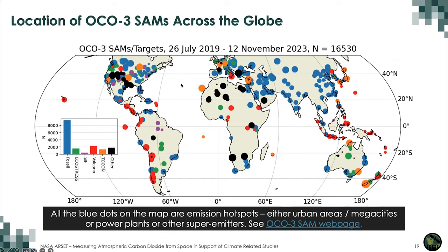Information about where SAMs are taken and how many have been taken over a particular location is available on a public webpage. I strongly recommend checking out the OCO-3 SAM webpage linked here. You will be able to zoom in on the map, pick out your own city, and see if SAMs have been taken there. If no SAMs have been taken over a place you are interested in, there is a feature on that webpage where you can request a SAM, and we can certainly take that into account when planning the next set of operations.